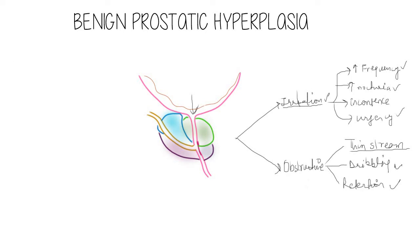When a male patient in his 50s or 60s reports with these clinical features, you should think of benign prostatic hyperplasia. The first investigation to order is ultrasonography. A simple USG can confirm the diagnosis by showing an enlarged prostate gland and urinary retention in the bladder.